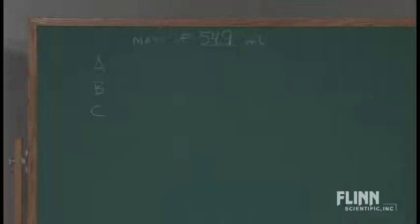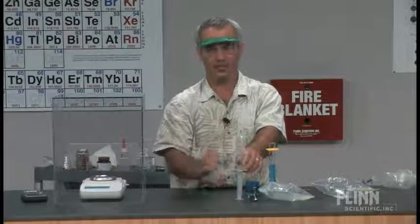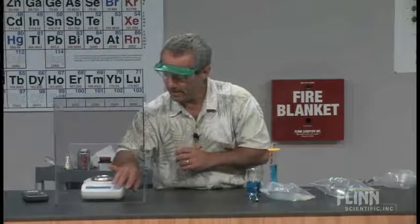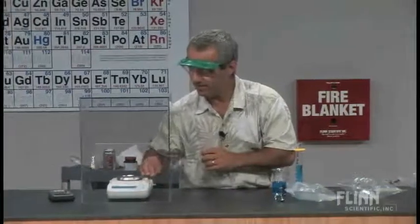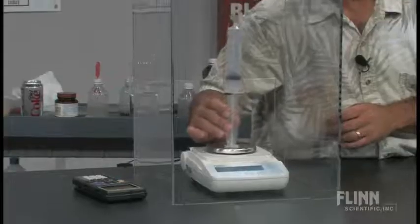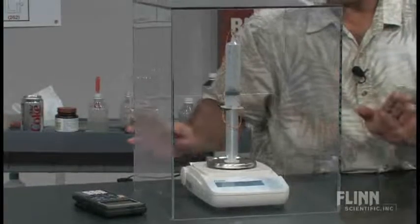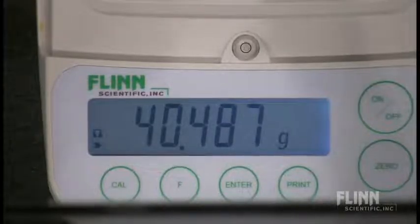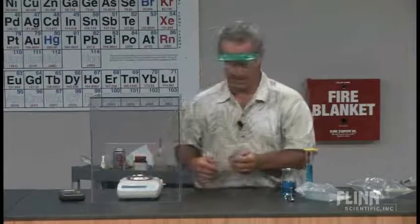Now of course we have to weigh the syringe. This will not work on a regular centigram balance. You won't get enough precision. So I go to a milligram balance. I've got one set up here. Let me zero it first. And put this on there. We're going to write down this mass of the syringe, 40.486 grams.